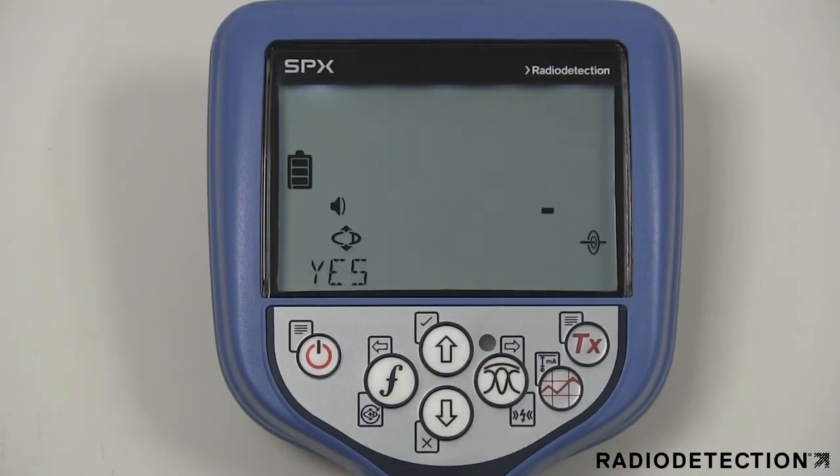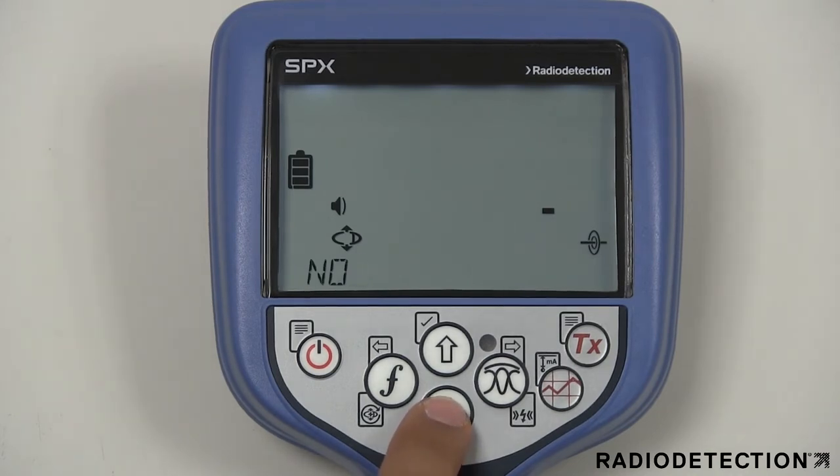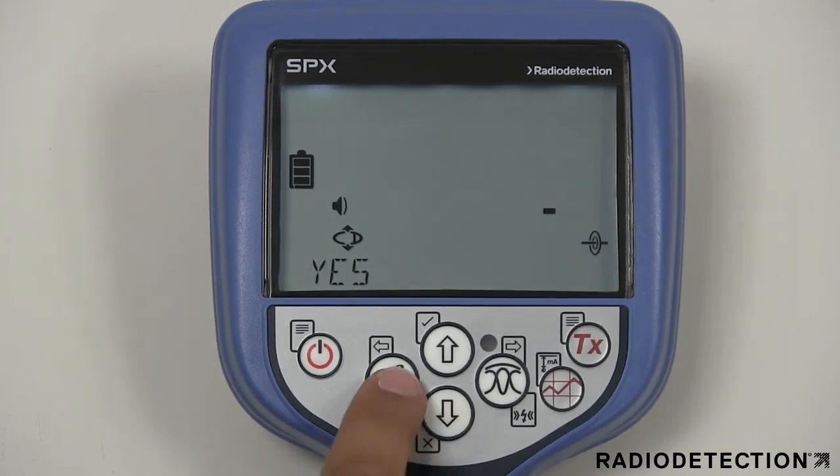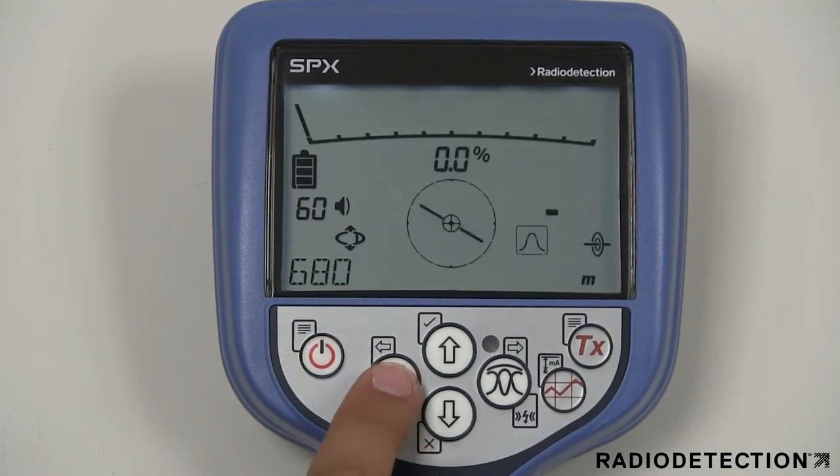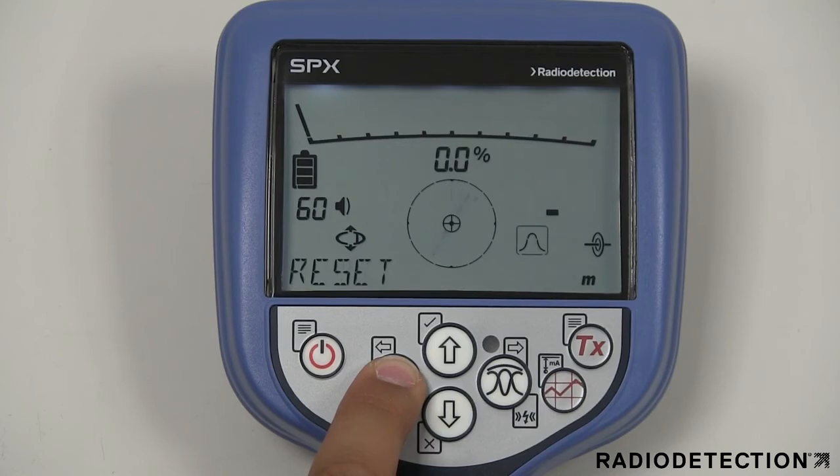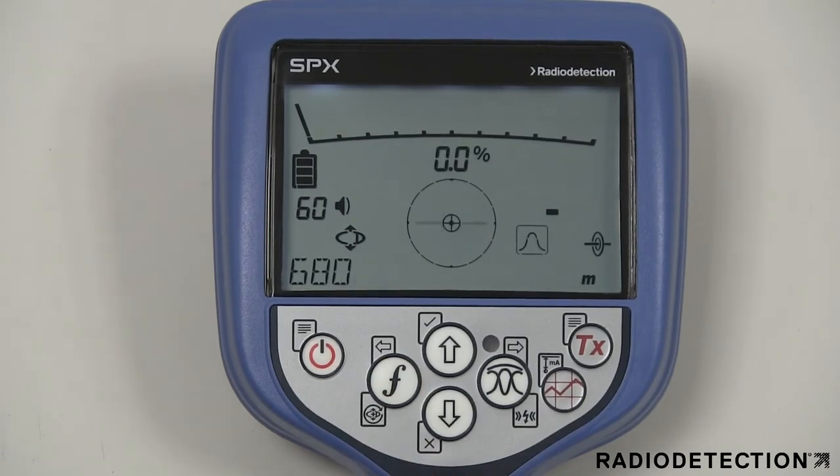The CDR mode can be used when using a current direction frequency. Before using current direction, you should always use the CD reset option, allowing you to find a new target utility. Alternatively, a shortcut to resetting the CD is to hold down the F key when you are in a CD frequency.